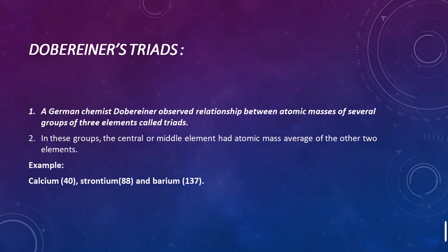For example, taking lithium, sodium, and potassium: lithium has an atomic mass of 6.9 and potassium has an atomic mass of 39. When we add 6.9 plus 39 and divide by 2, we get 23, which is the atomic mass of sodium. This confirmed Döbereiner's Triad for this group.